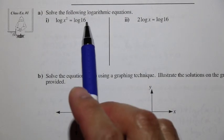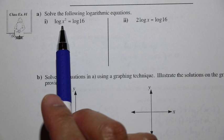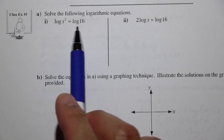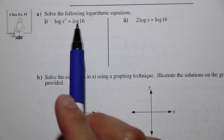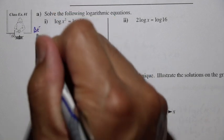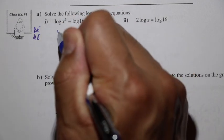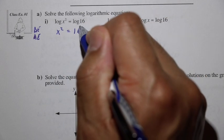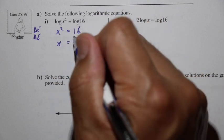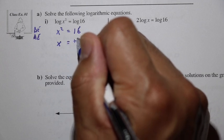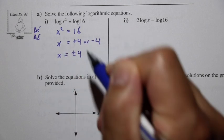Class Example 1: solve log(x squared) equals log 16. This is the case where log of one argument equals the log of another argument — the base is hidden but it's base 10. Since the bases are equal, the arguments are equal: x squared equals 16. Taking the square root of both sides gives x equals positive 4 or negative 4.